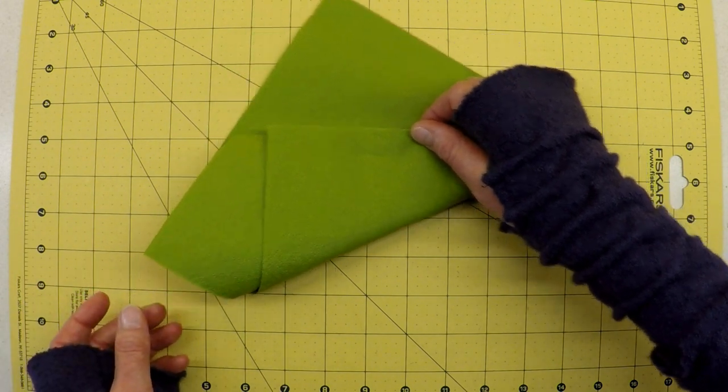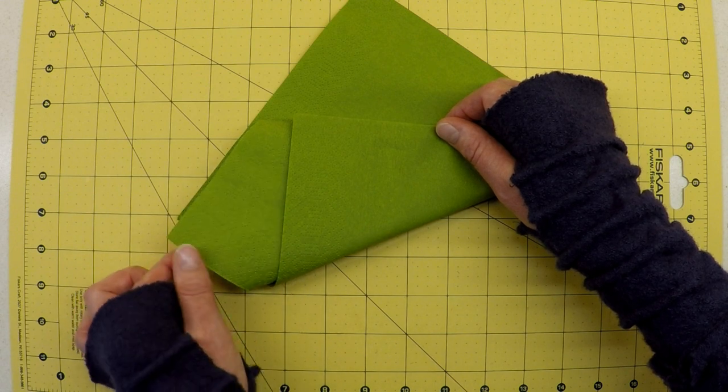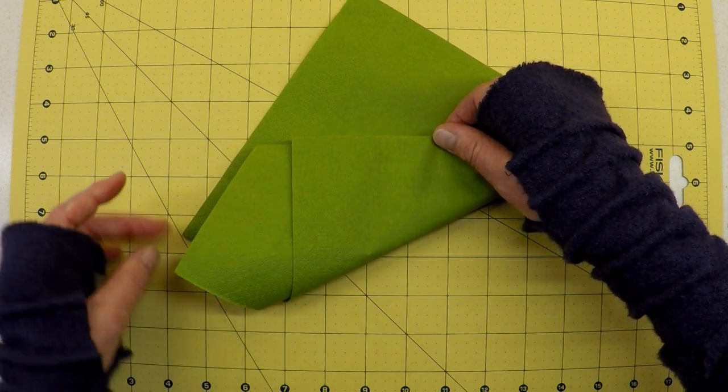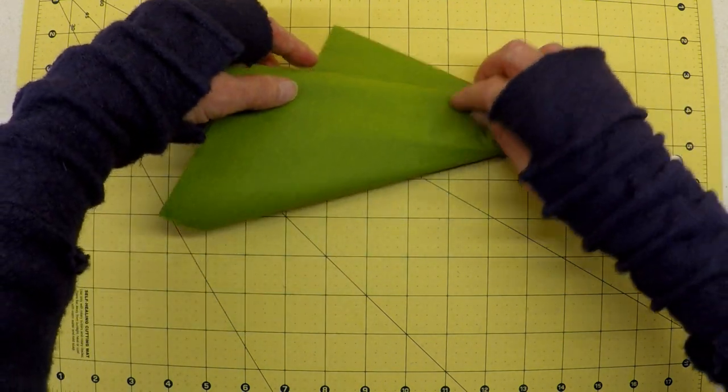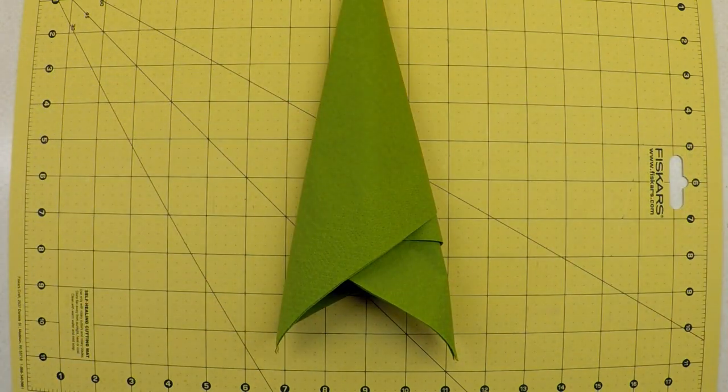If you continue to fold around keeping it fairly tight, then what you're looking for is that when you get to that position, you've got your two points opposite each other. As long as you're in that area you'll be fine. Just continue to fold that around until you've got that fully folded position.